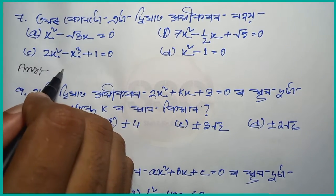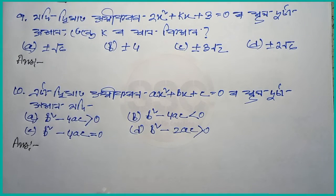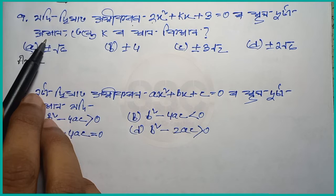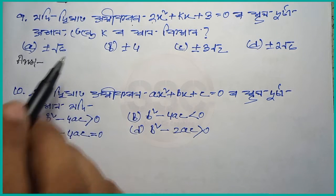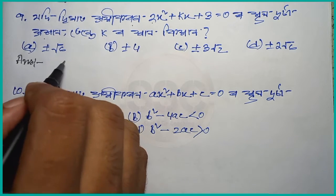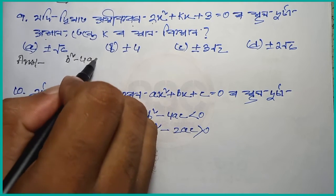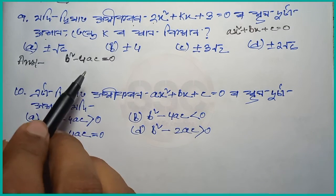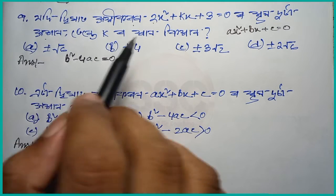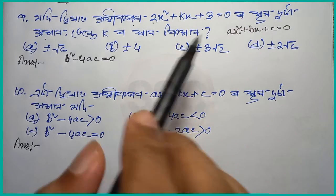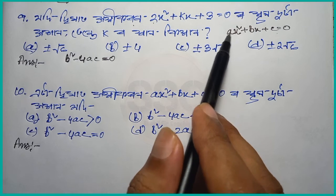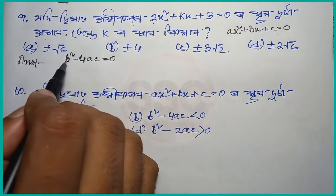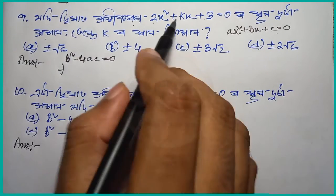Option C — the equation 2x squared plus kx plus 3 is equal to 0. This is the same option. If the second option is equal to 0, then b squared minus 4ac is equal to 0. We will compare the second option and find the value between a, b, and c. Two is equal to zero.